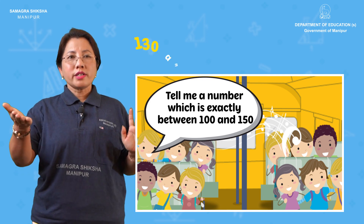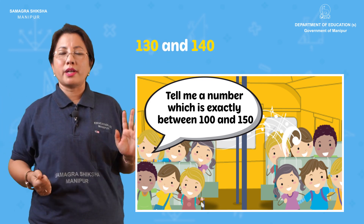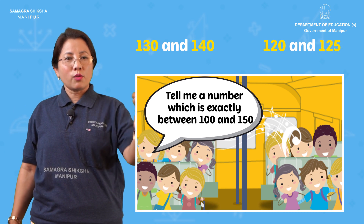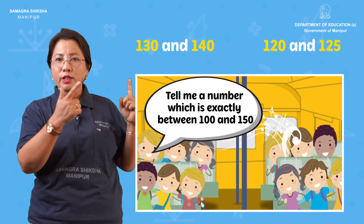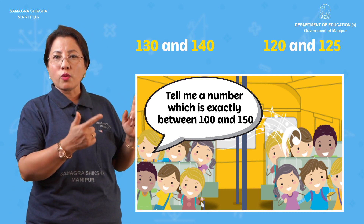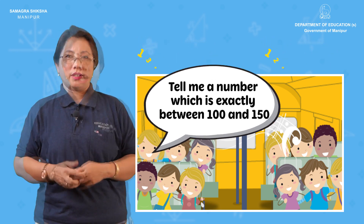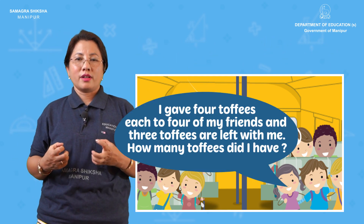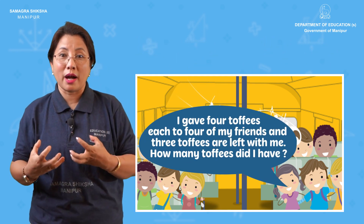130, 140, 120, and 125 — that's how you do it. Any two numbers between 100 and 150.